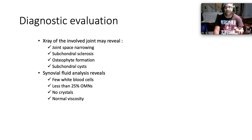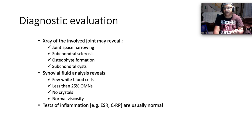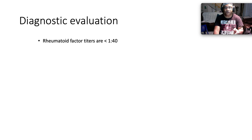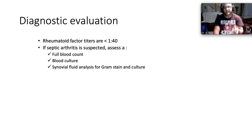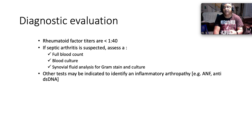Those are the common X-ray findings. If there is a joint effusion and you aspirate it, synovial fluid will show few white blood cells, less than 25% polymorphonuclear cells, no crystals, and normal viscosity. Tests of inflammation — ESR and C-reactive protein — are usually normal. Rheumatoid factor titers are less than 1:40, essentially negative. If septic arthritis is suspected, assess full blood count, blood culture, and send synovial fluid for Gram stain and culture. Other tests such as antinuclear factor and anti-double-stranded DNA may be indicated to identify an inflammatory arthropathy.